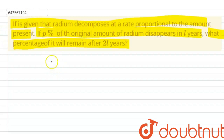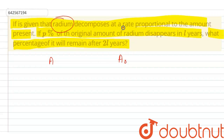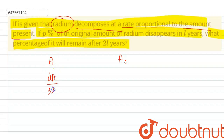Now let the remaining amount of radium be A, then the initial amount will be A0. It is given that the rate is proportional to the amount present — that is, dA upon dT is proportional to A.